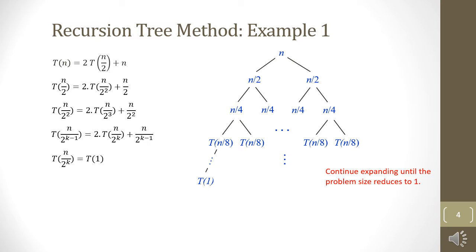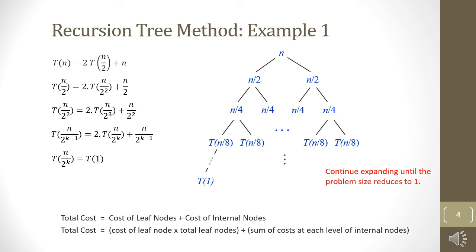Once we have unrolled the recursion, we need to find the cost of the tree. The cost of the tree has two components: the cost of all leaf nodes and the cost of all internal nodes. We find the cost of all leaf nodes separately and the cost of all internal nodes separately, by calculating the cost at each level and summing. We denote cost of leaf nodes as LC and cost of internal nodes as IC.